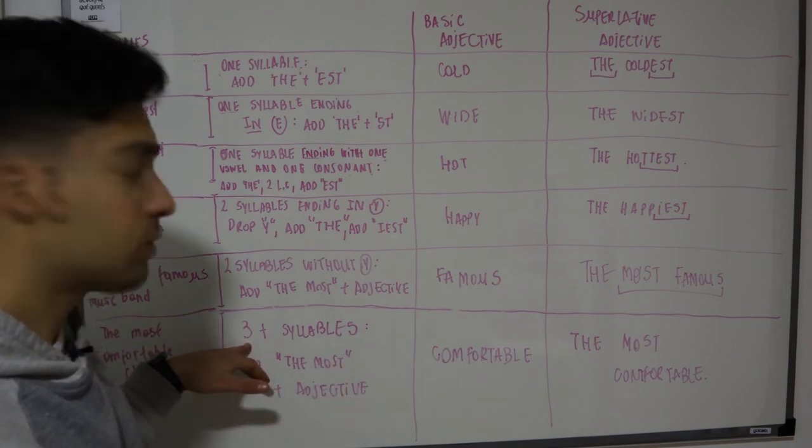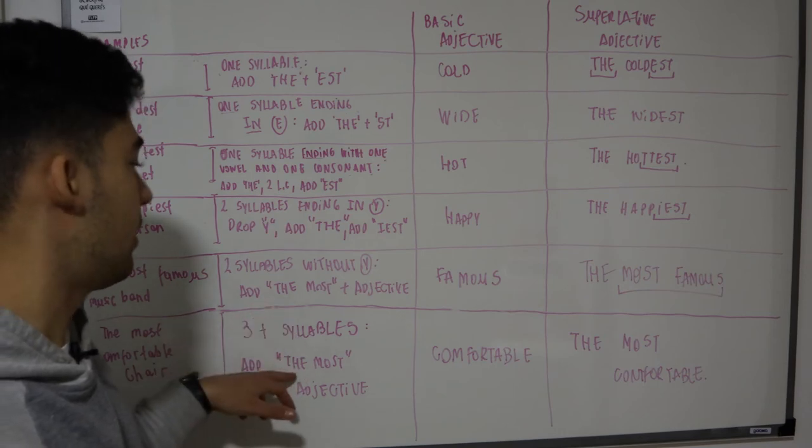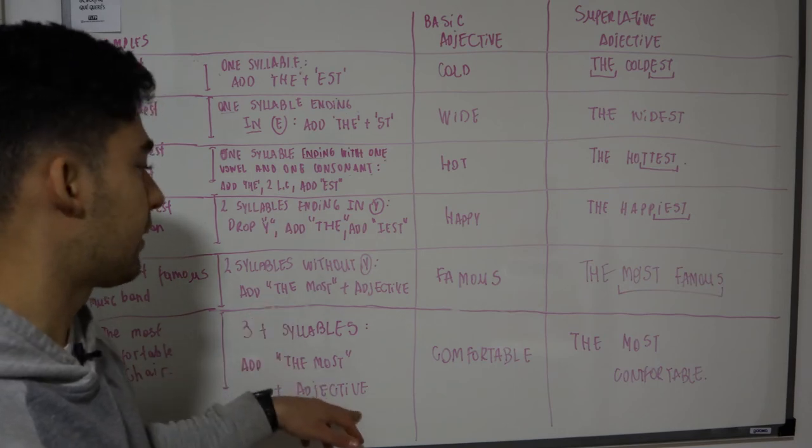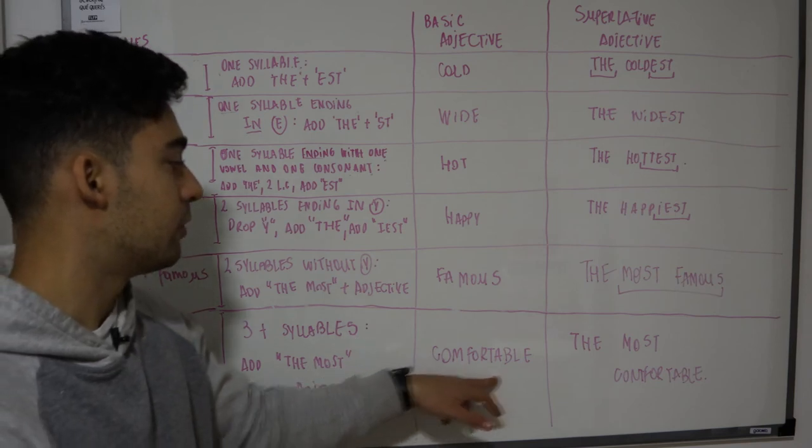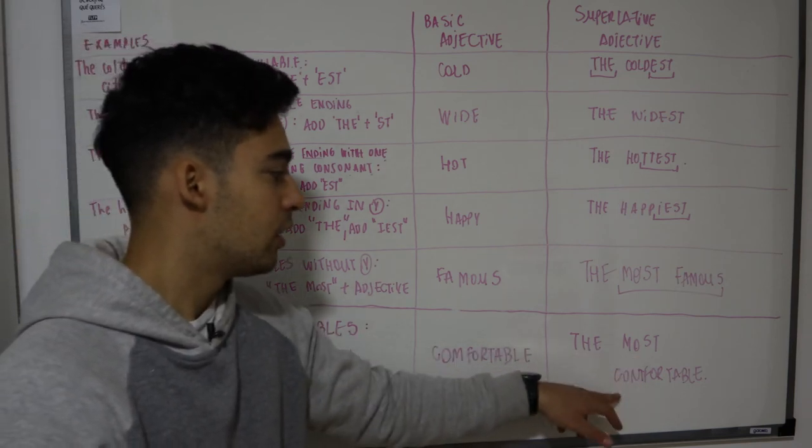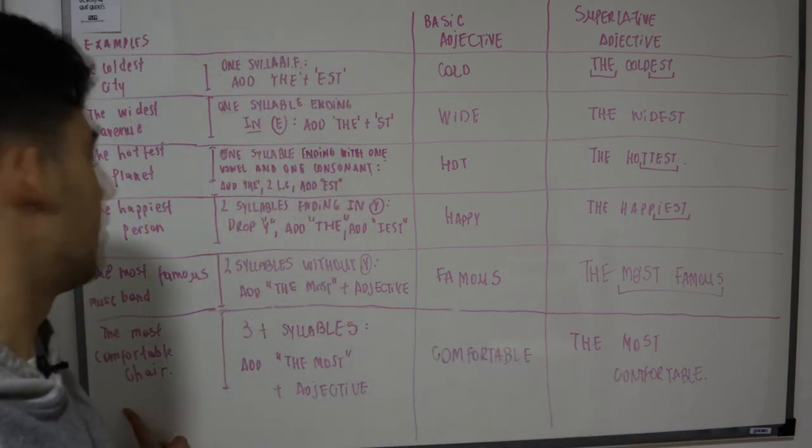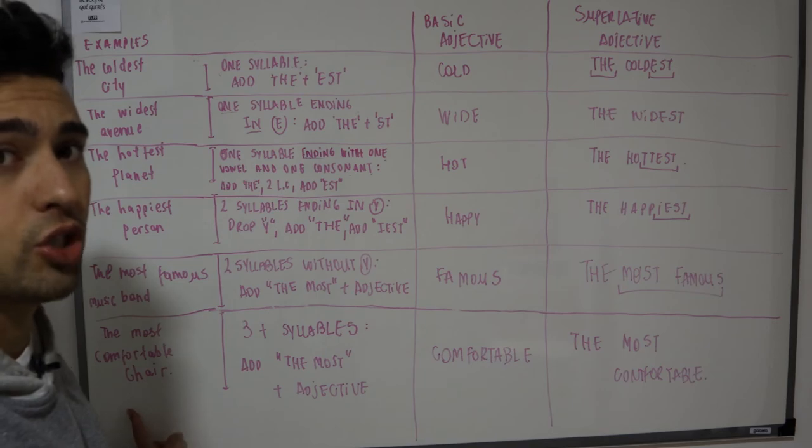Y en la última regla tenemos tres o más sílabas. Se le agrega también como arriba el the most y el adjetivo original. Entonces para comfortable, decimos the most comfortable. Y como ejemplo el último decimos the most comfortable chair.